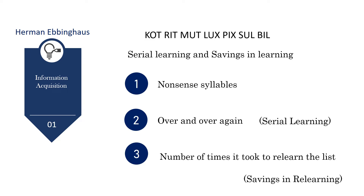But how is it done? The difference between the number of times it took for him to learn the list initially and the number of times it took for him to relearn the list is the savings in relearning.